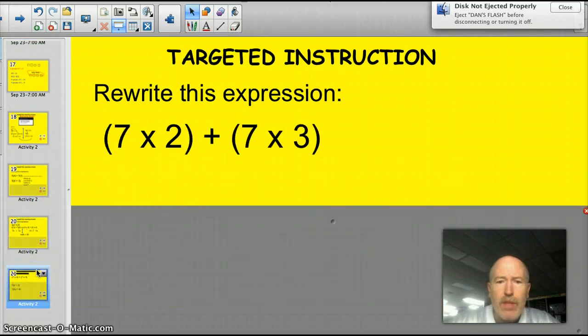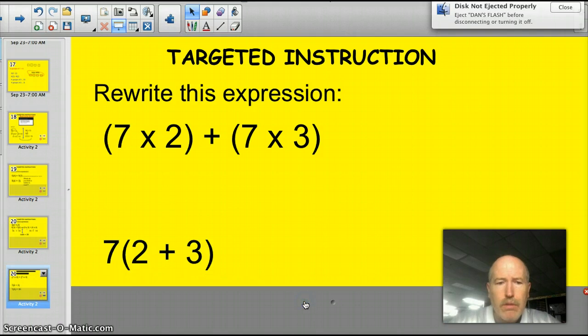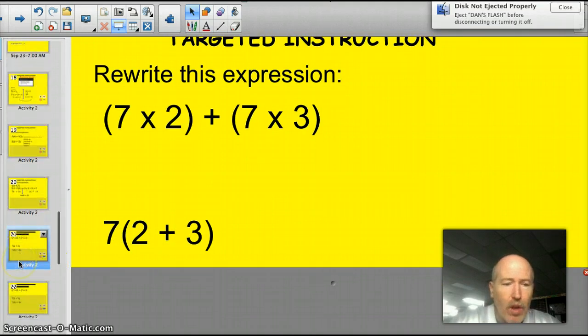Alright. One more. Rewrite this expression for me. Did you pause the video? Really? Alright. Let's see how you did. Where is it? There it is. I distributed the 7, so I have... It's distributed up here. 7 times 2 and 7 times 3, and I just combine these two terms, the 2 plus 3, and I have 7 times that 2 plus 3. It's a pattern. It gets easy to follow.